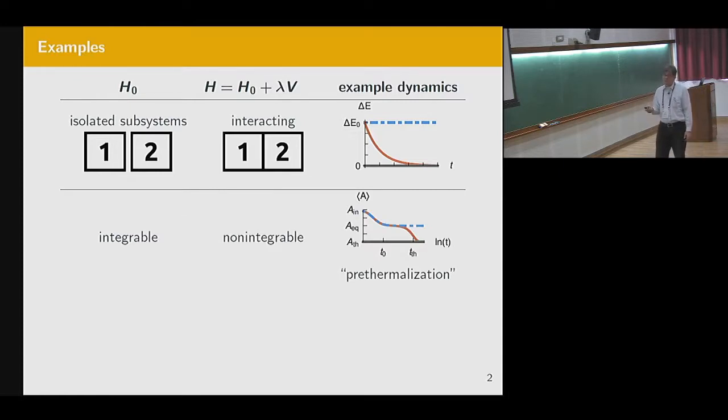Or the unperturbed system is an integrable one. So some observable would relax from an initial non-equilibrium value towards some steady state, equilibrium but not thermal long-time limit. And then you switch on a perturbation, which breaks the integrability. So for weak perturbation, you would expect it follows the unperturbed behavior for quite some time. But ultimately, please note this is logarithmic, it is bound to go to the thermal long-time limit. And so this plateau or the whole behavior as a whole is usually called pre-thermalization.